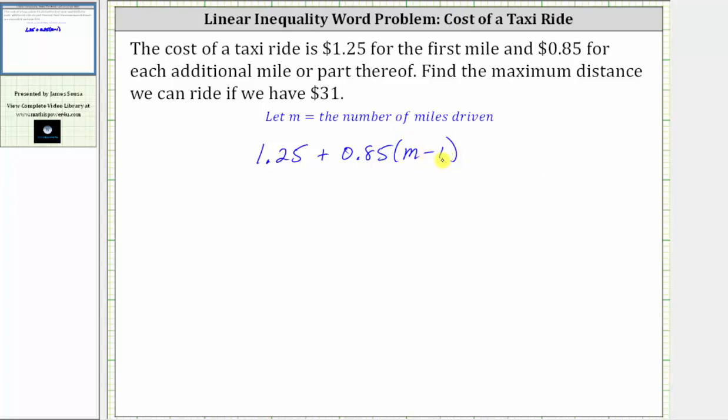Again, we're subtracting one here because the first mile has a different cost, the cost of $1.25, and the remaining miles have a cost of 85 cents per mile. For example, if the ride is 10 miles, the first mile has a cost of $1.25. The remaining nine miles, given by the expression m minus one or 10 minus one, has a cost of 85 cents per mile.